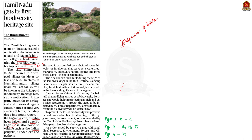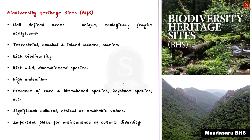In this context, let's learn about biodiversity heritage sites. Biodiversity heritage sites are well-defined areas that are unique and have an ecologically fragile ecosystem. They may be terrestrial, coastal, inland waters, or marine, and they have rich biodiversity comprising both wild and domesticated species.